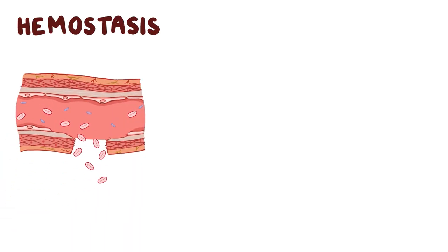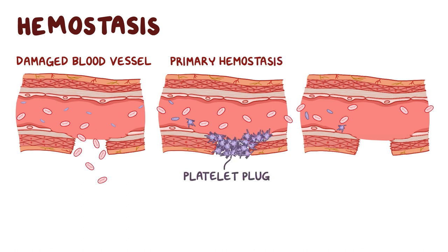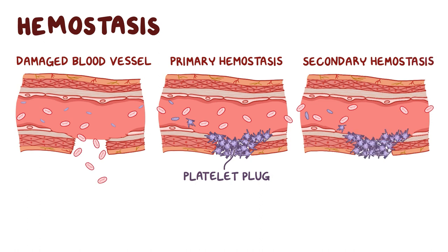Factor V Leiden is a hemostasis disorder. Hemostasis is the process where blood flow is stopped after there's damage to a blood vessel, and it has two steps. Primary hemostasis involves the formation of a platelet plug at the site of injury, and secondary hemostasis involves the coagulation cascade, where several clotting factors come into play to form a fibrin mesh over the platelet plug to reinforce it, forming a blood clot.